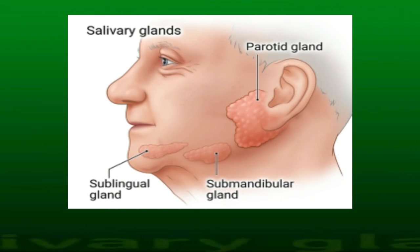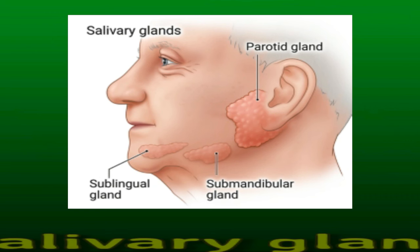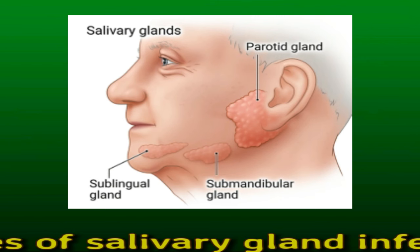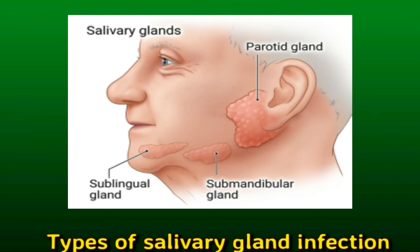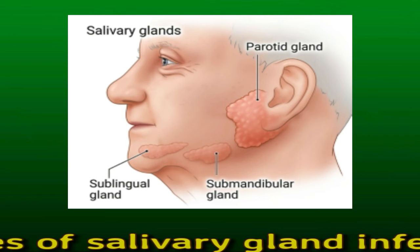Types of salivary gland infection. A person has three pairs of major salivary glands, with one of each pair on either side of the face. Any of these six glands can develop an infection. The parotid glands are inside the cheeks, extending from the top of the ears into the jaw — the largest salivary glands. The submandibular glands are behind the lower jaw, under the tongue and chin — the second largest. The sublingual glands are on either side of the tongue, deep under the floor of the mouth — the smallest of the major salivary glands.